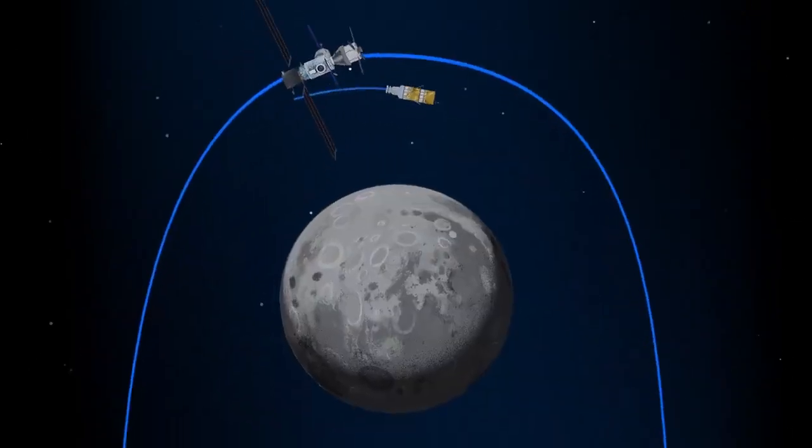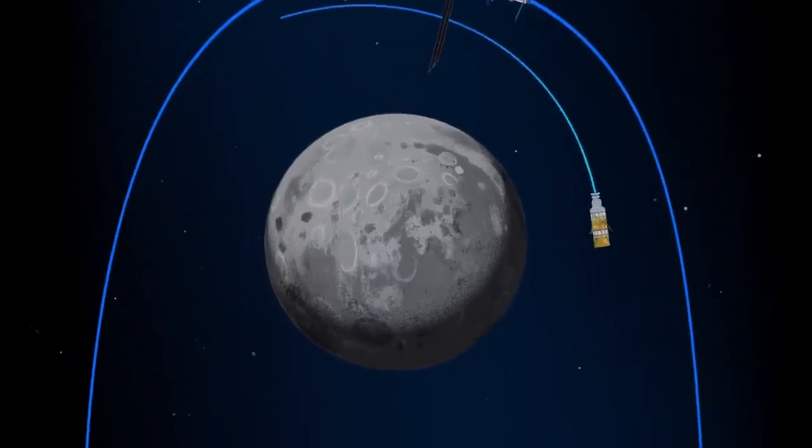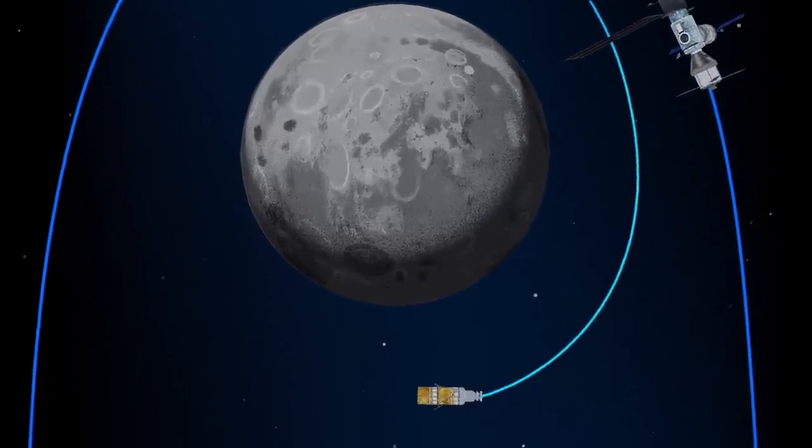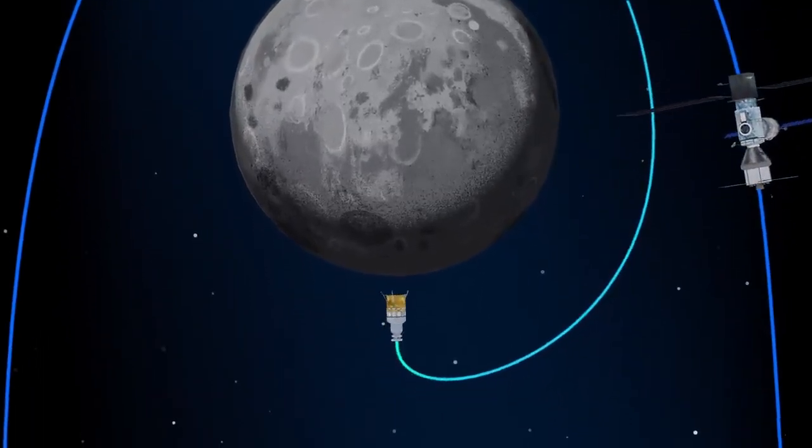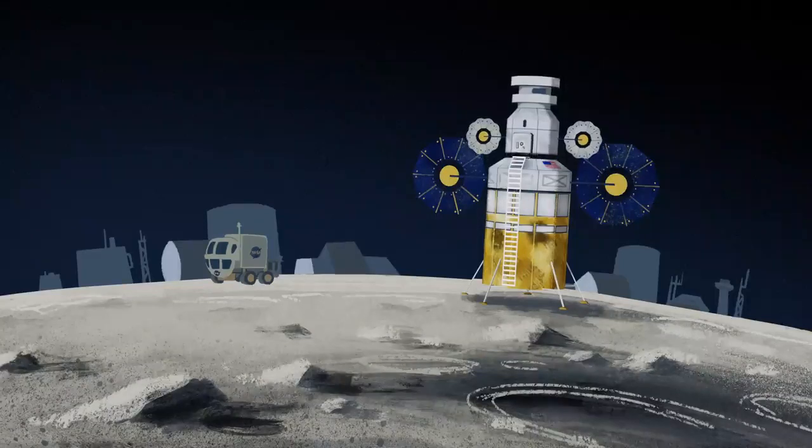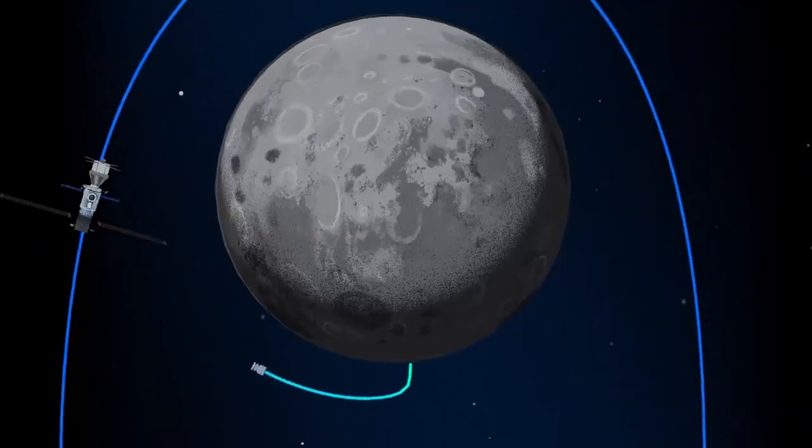The lunar lander system itself is built for three unique steps. Descending from the halo orbit of Gateway down to a low lunar orbit, descending from low lunar orbit to the surface, and once the lunar mission is complete, launching from the surface of the Moon and ascending all the way back to the orbiting Gateway.